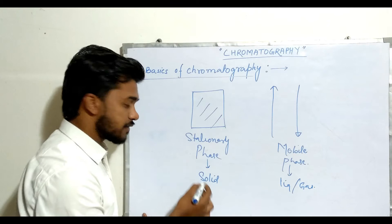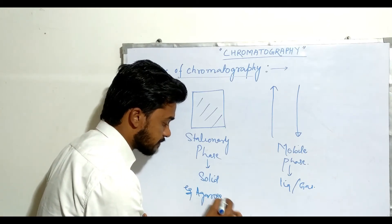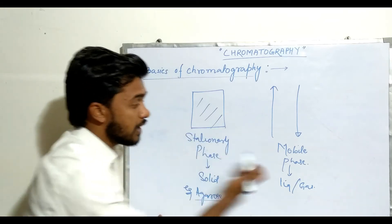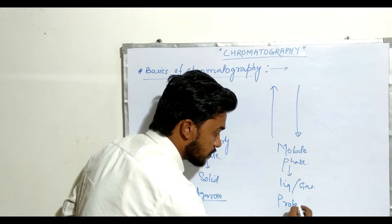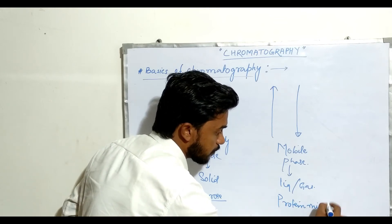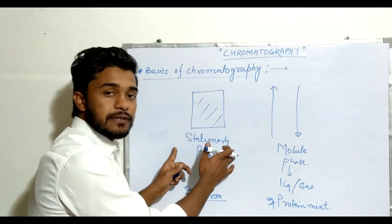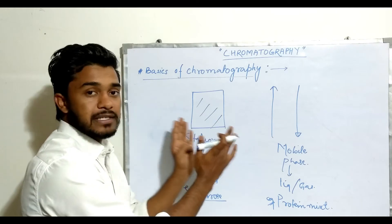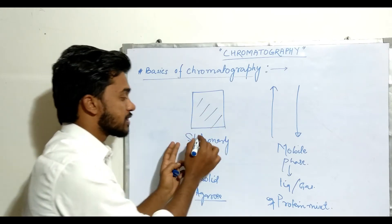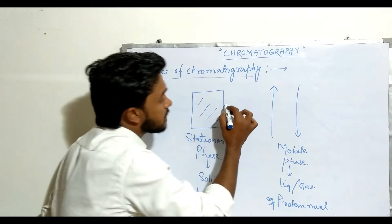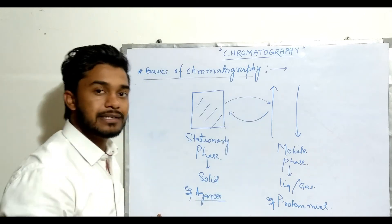An example of the stationary phase is agarose gel — it can be agarose gel based on the type of chromatography. The mobile phase can be a protein mixture in liquid form. In every type of chromatography we have a stationary phase and a mobile phase, and there is an interaction between them.